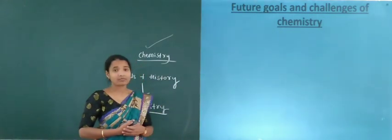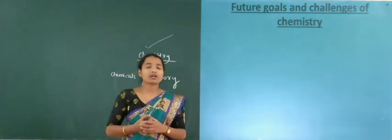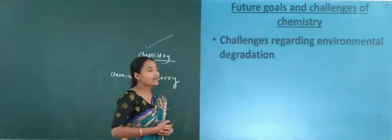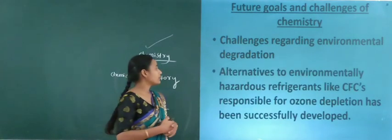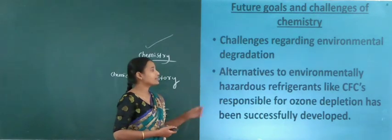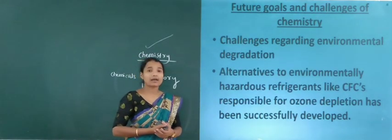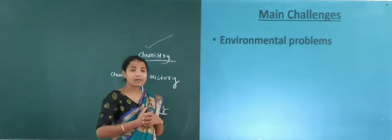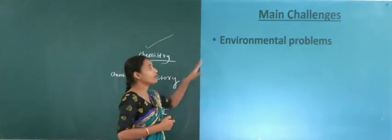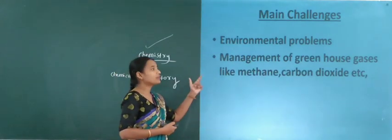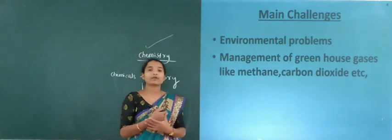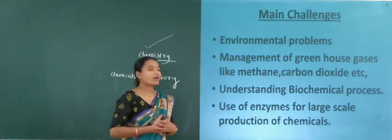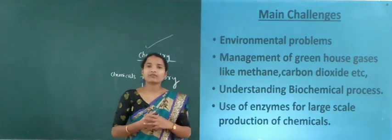Next is the future goals and challenges of chemistry. Challenges regarding environmental degradation — alternatives to environmentally hazardous refrigerants like chlorofluorocarbons (CFCs), which are responsible for ozone depletion, have been successfully developed. Main challenges in the chemistry field include: environmental problems, management of greenhouse gases such as methane and carbon dioxide, understanding biochemical processes, and use of enzymes for large-scale production of chemicals.